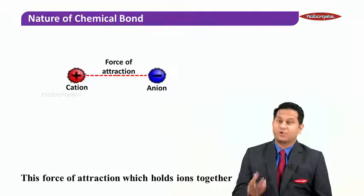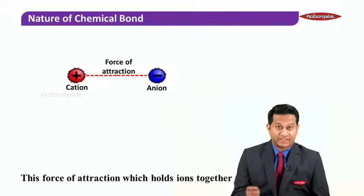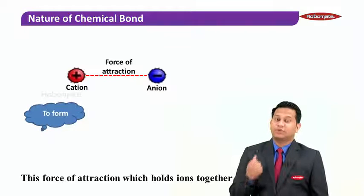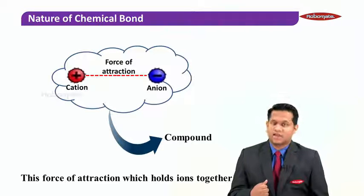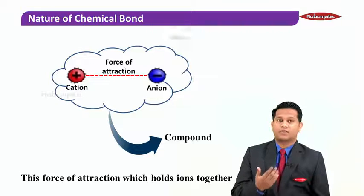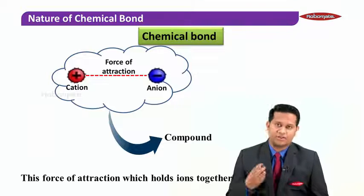This force of attraction holds the two ions, cation and anion, together to form something called a compound. This force of attraction which holds the ions together to form a compound is called a chemical bond.